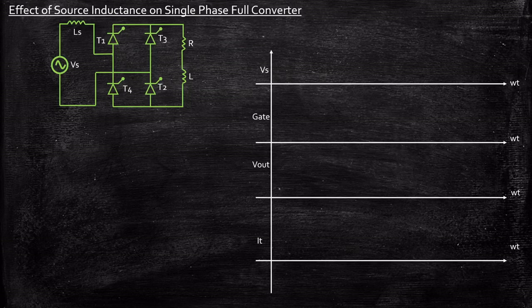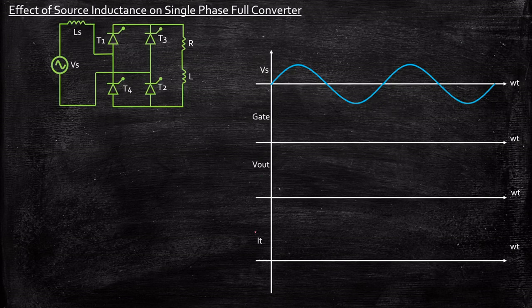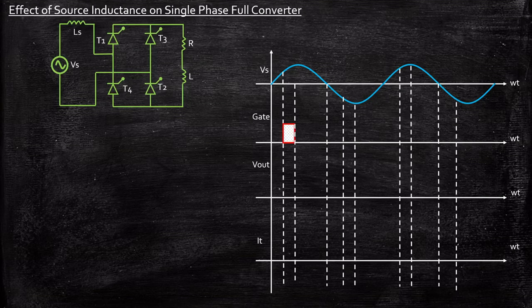Now let's consider the waveforms just like the way we did for the single phase full converter. We'll be considering a sinusoidal voltage source Vs, applying gate pulses at suitable intervals, and analyzing the output voltage waveform as well as the current waveform across the thyristors. During the positive half cycle, we'll be supplying a gate pulse at this particular point and examining what happens to the operation of the circuit.